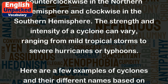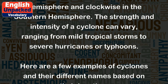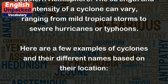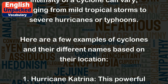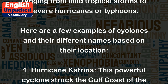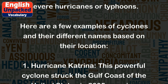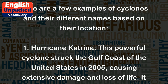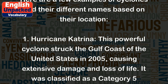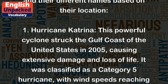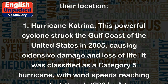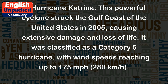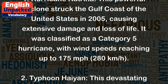Here are a few examples of cyclones and their different names based on their location. 1. Hurricane Katrina: This powerful cyclone struck the Gulf Coast of the United States in 2005, causing extensive damage and loss of life. It was classified as a Category 5 hurricane, with wind speeds reaching up to 175 mph.